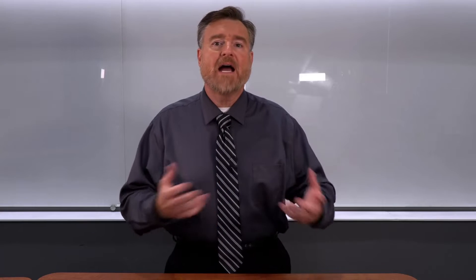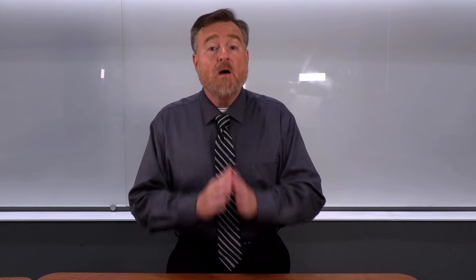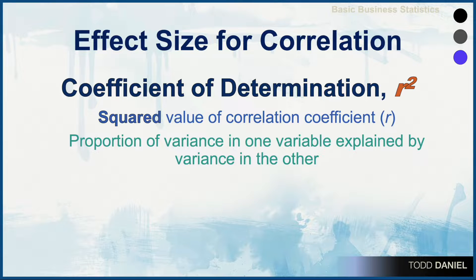How do we know that? Because r-squared is the coefficient of determination — it's the squared value of our correlational coefficient. It is the proportion of variance in one variable explained by variance in the other.